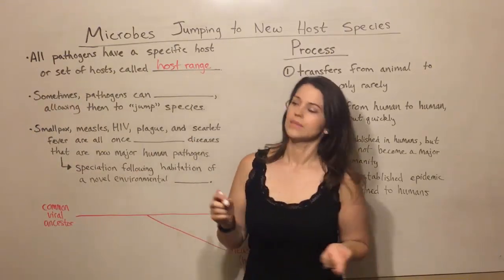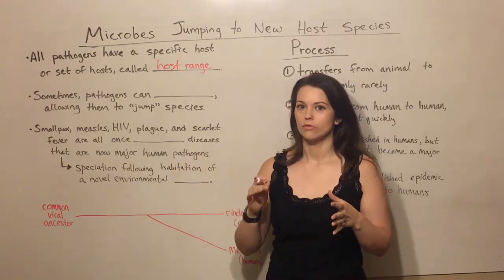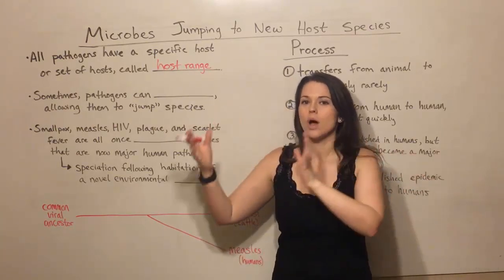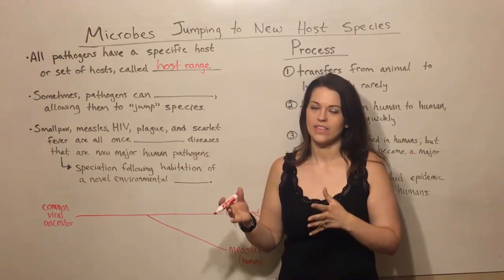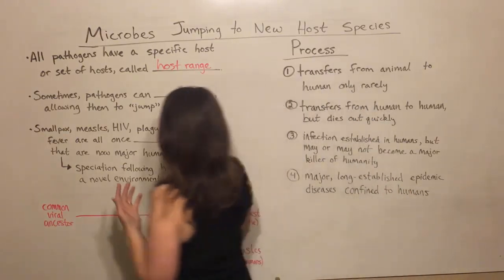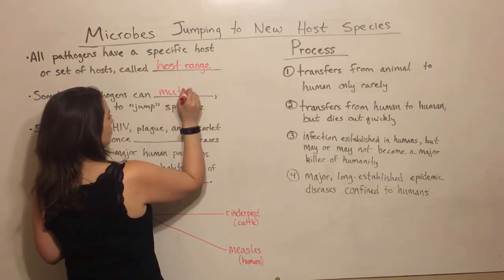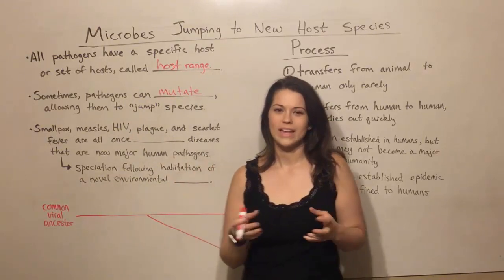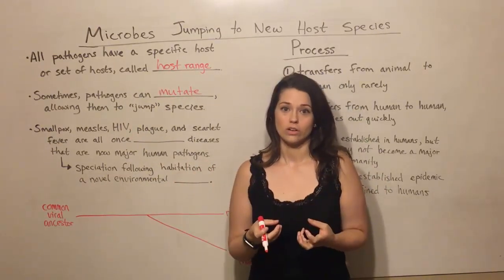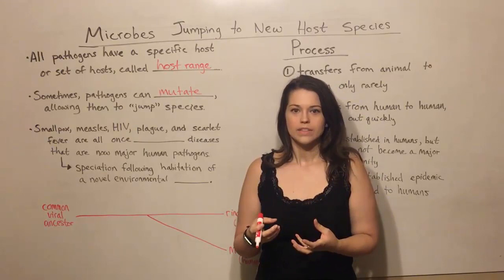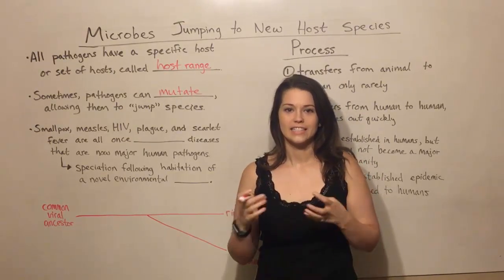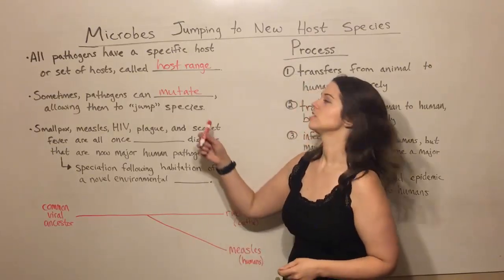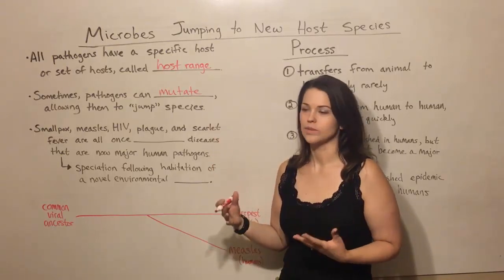Now sometimes a pathogen can actually jump from a host that it's been infecting for many generations into a brand new host species, and this is accomplished by mutation. When the pathogen — whether it's a virus, a bacterium, or a fungus — when its genetic material mutates, sometimes that allows it to infect a cell in a host that it previously was not able to infect. And that's a result of that random mutation process.